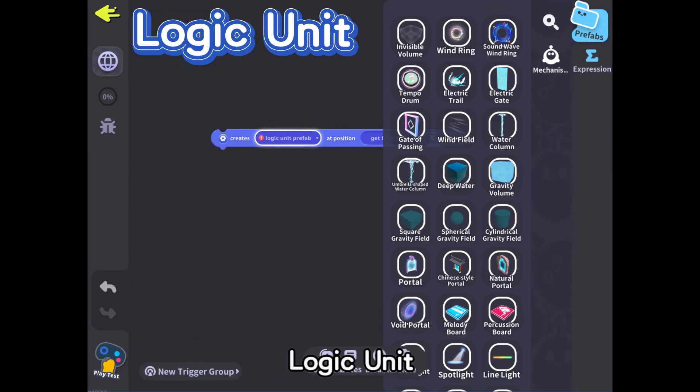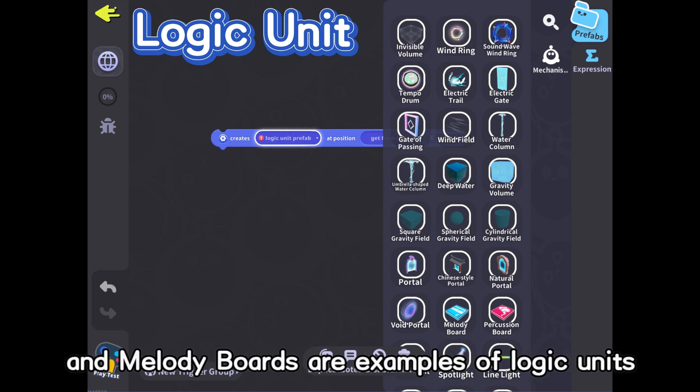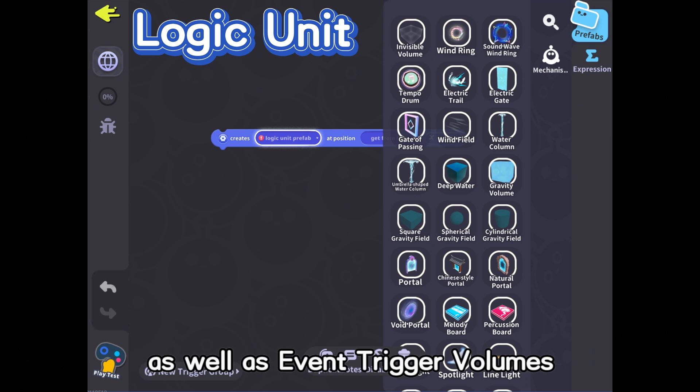Logic unit refers to the mechanisms without physical form. Wind ring, portal, and melody boards are examples of logic units, as well as event trigger volumes.